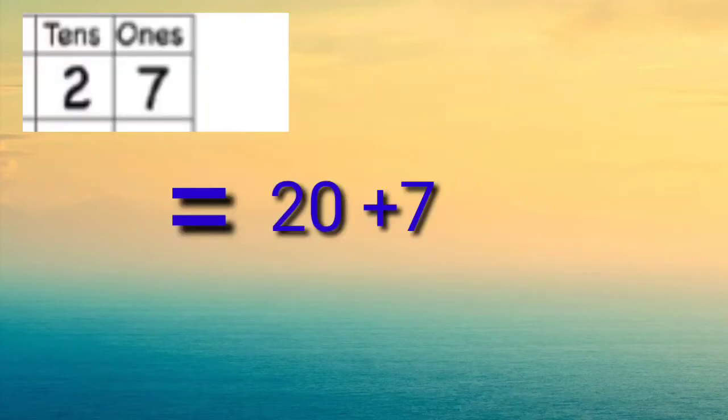Here you can see I have written 1s and 10s and under the 1s I have written 7 and under the 10s I have written 2 means 27. So, 27 is equal to 20 plus 7. 2 tens and 7 ones. So, 20 plus 7 is equal to 27.